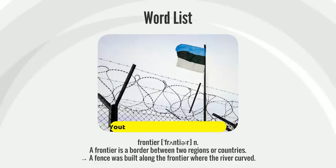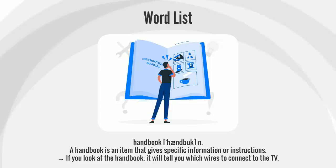A frontier is a border between two regions or countries. A fence was built along the frontier where the river curved.